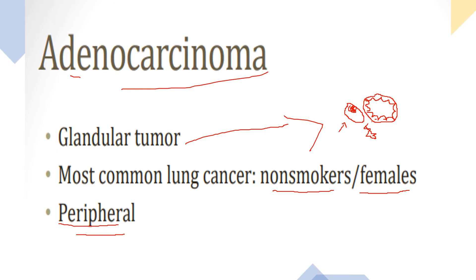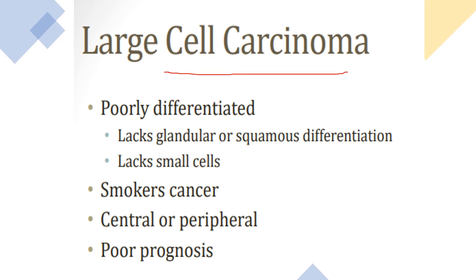Large cell carcinoma is a poorly differentiated cancer. Under the microscope, you find large cells that do not fit glandular structure, squamous differentiation, or small round cells. It is a diagnosis of exclusion: if you cannot find small round cells, glandular structure with mucous secretion, or intercellular bridges with keratin trails, it is most likely large cell carcinoma. It is found in smokers, can be peripheral or central, has very poor prognosis, and secretes no hormones.